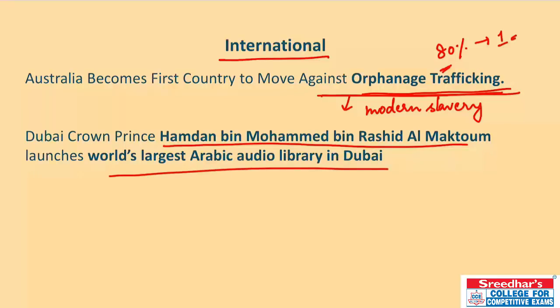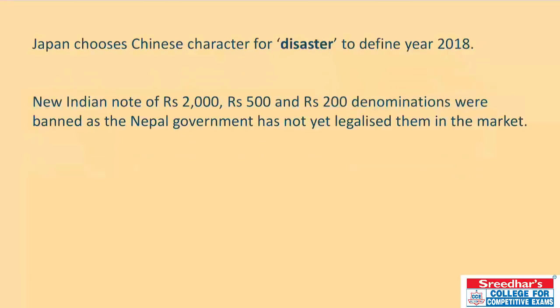Hamdan bin Mohammed bin Rashid Al Maktoum, Dubai Crown Prince, has launched the world's largest Arabic audio library in Dubai. Japan has chosen a Chinese character for 'disaster' to define 2018, representing the disasters that occurred that year.